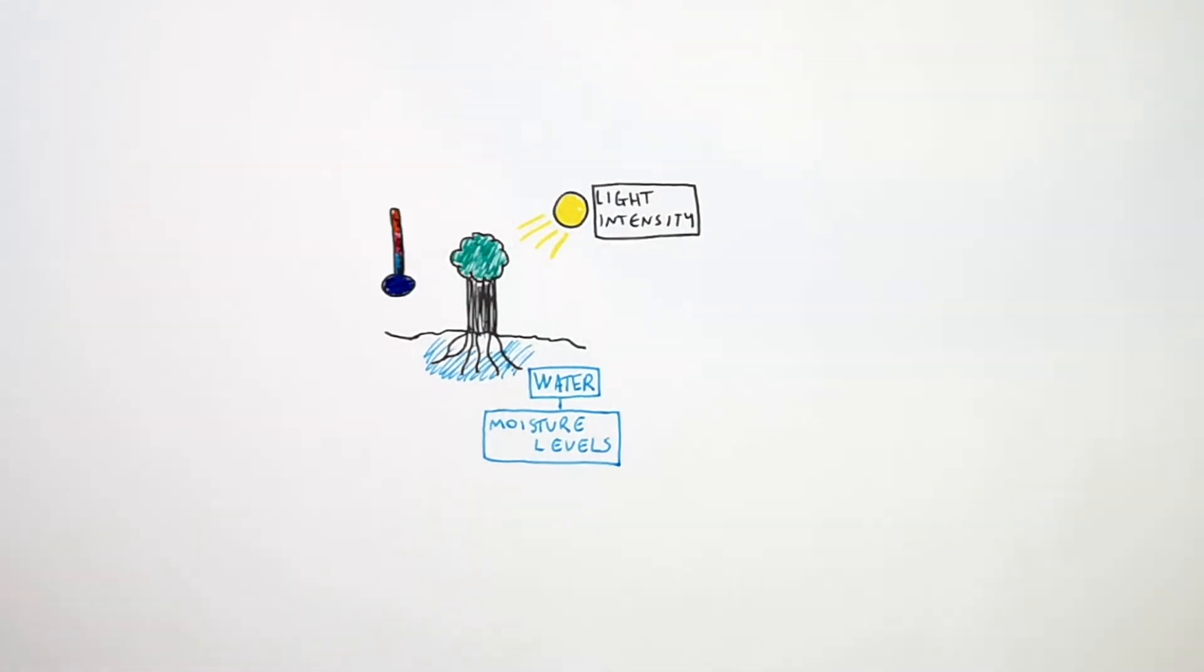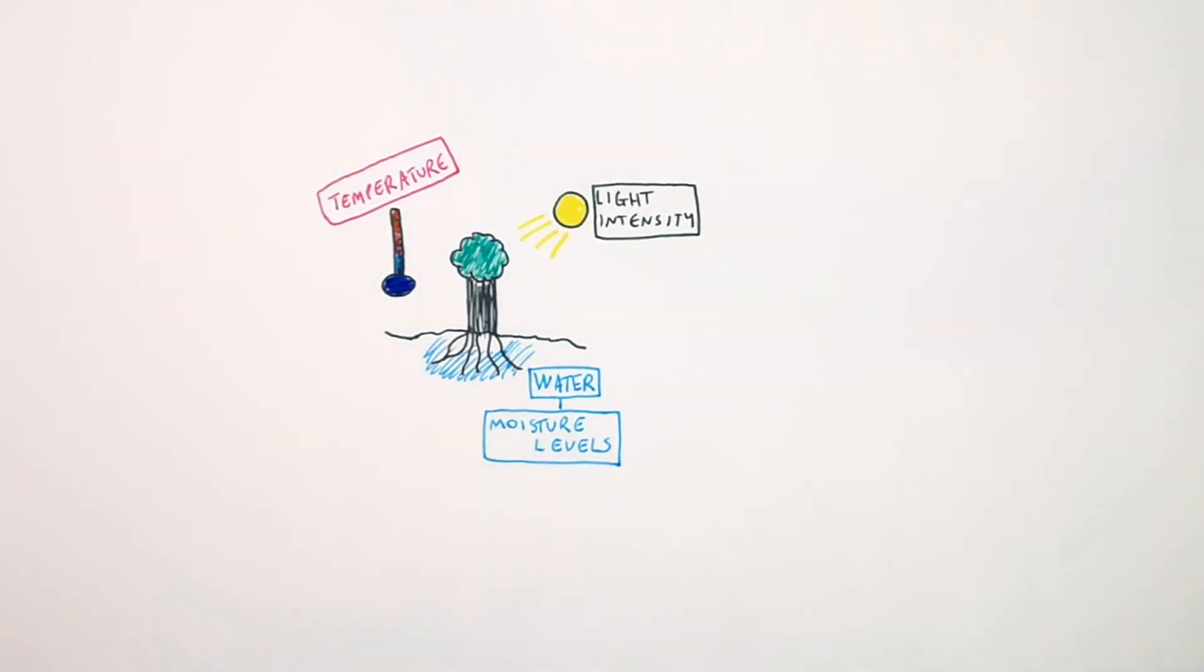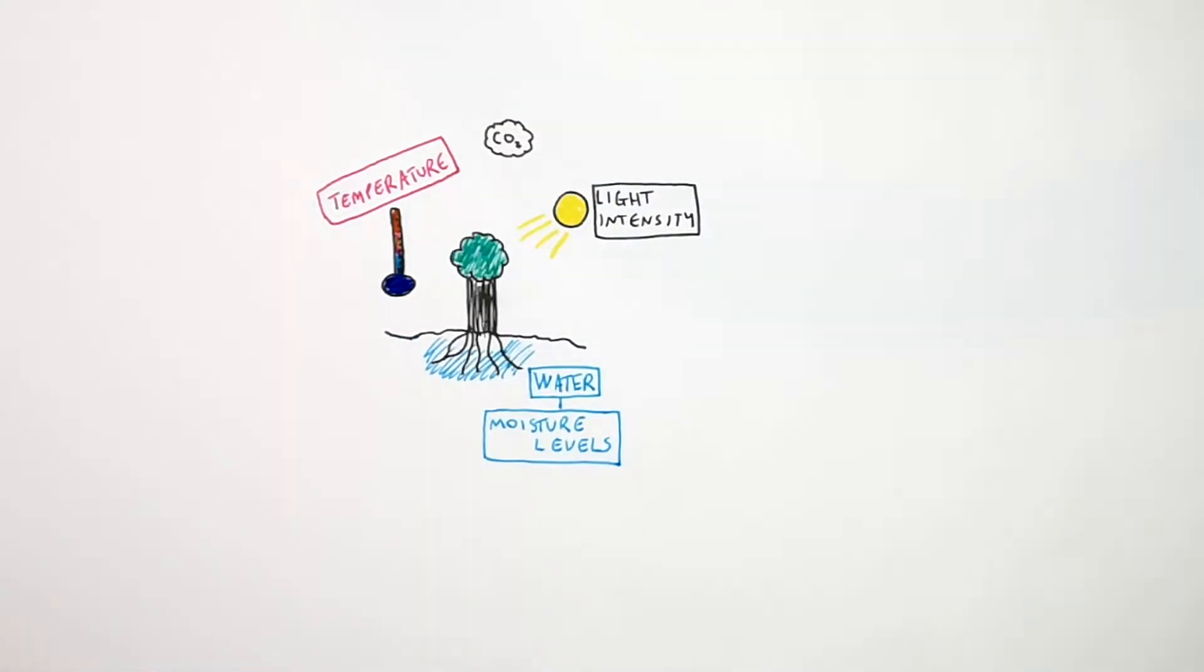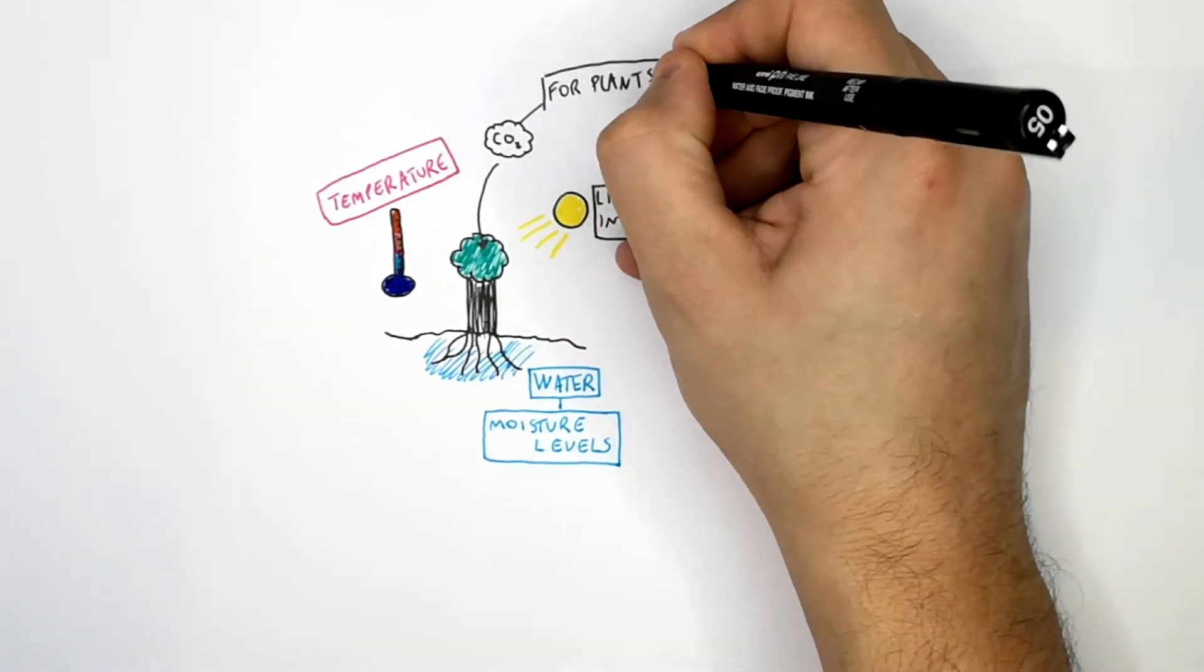Temperature is another abiotic factor. Temperature is a non-living factor that can affect organisms in an ecosystem. For plants, carbon dioxide concentrations in the atmosphere are an abiotic factor.